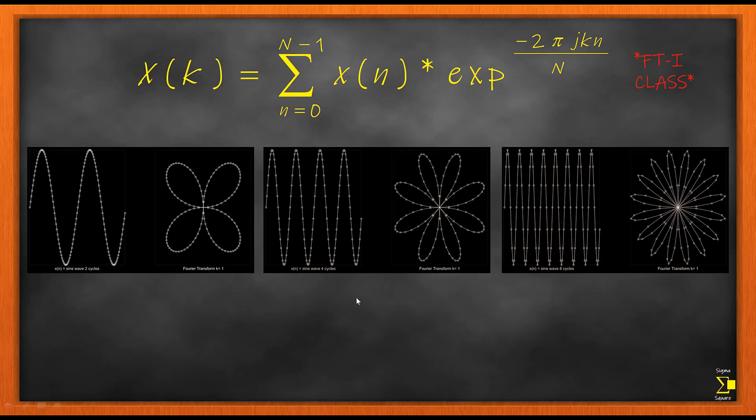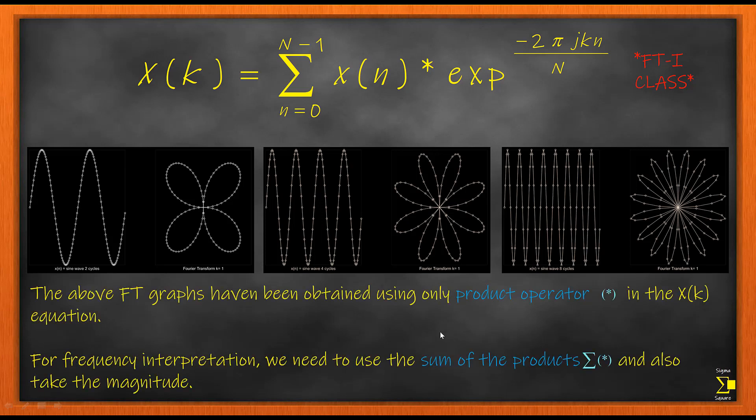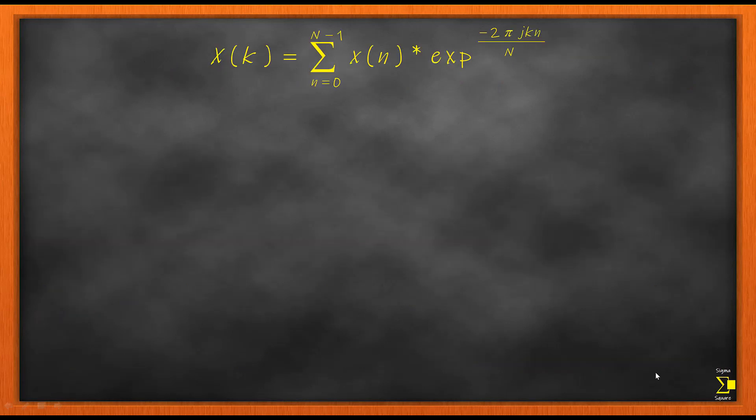Here you have the FT representation in cycle form, which is obtained by using only the product term. Now we will assume the exponential term in the Fourier Transform equation is equal to k_n, and N is equal to number of samples, which is 4 for a compact and easy explanation.